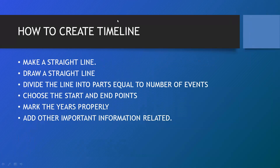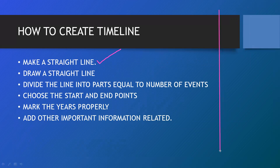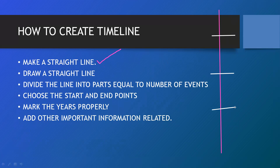Now let's learn how to create a timeline. First, make a straight line — make it horizontal, that is better. Then divide the straight line into an equal number of parts based on the number of events. Suppose you have four events, so divide it into four equal halves.